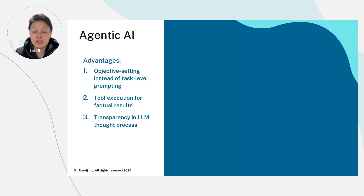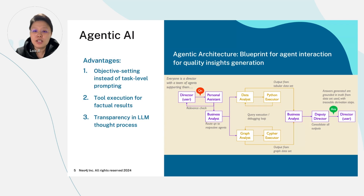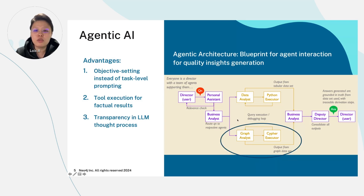Many of you here might have already heard of or even implemented your own agentic AI applications. Since this is not the focus of my sharing today, I'll be brief about the agentic introduction and instead focus on how we have used the graph as part of our agentic backend setup. Our agentic backend basically allows the user to ask a question, and our business analyst agent will break it down into subtasks before triaging them to the respective agents. Each agent focuses on these subtasks and generates an answer using their suite of tools, before sharing results back with the business analyst agent. A deputy director agent has been put in place to consolidate all of these insights together with the supporting data, to generate a coherent and contextualized insight before answering back to the user.